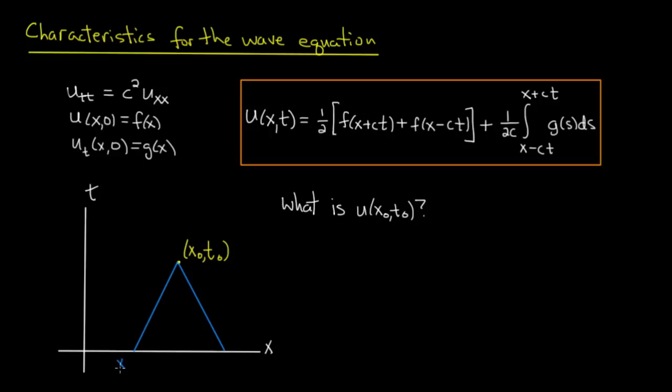The first one will intersect at x0-ct0, that's the x value at which this intersects the x-axis, and the second one will intersect at x0+ct0. So remember, this is just a line of slope -1/c and this is a line of slope -1/c.